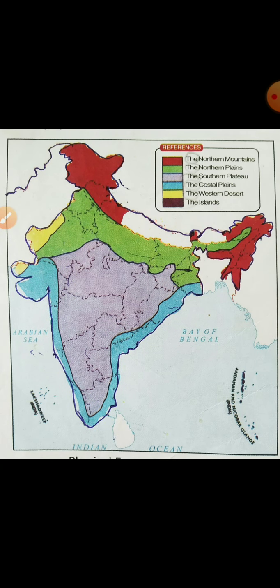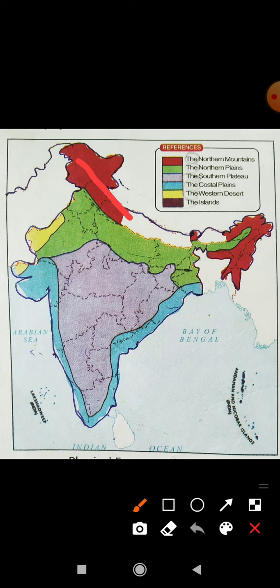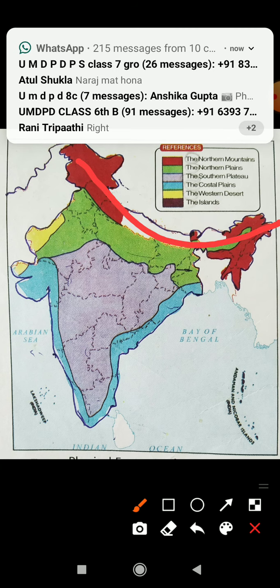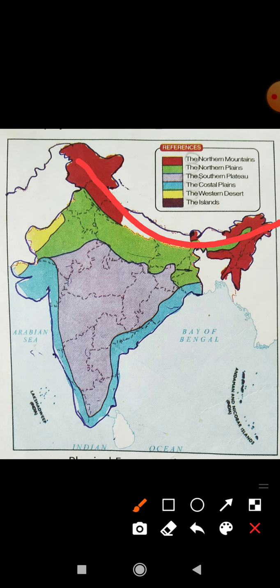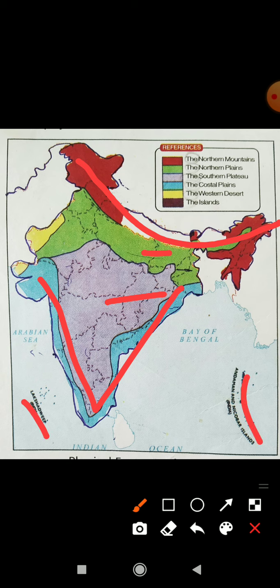This is India on the map. You can see the mountainous area here. I will tell you about the relief features — the physical features of India: mountains, Northern Plains, Southern Plateau, Coastal Plains, islands, and deserts. These are the relief features.